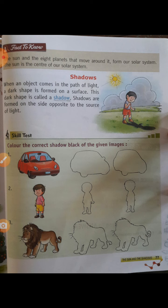Skill Test: Colour the correct shadow black of the given human image. Now, first paragraph, first fact to know — this is how we read and explain it.